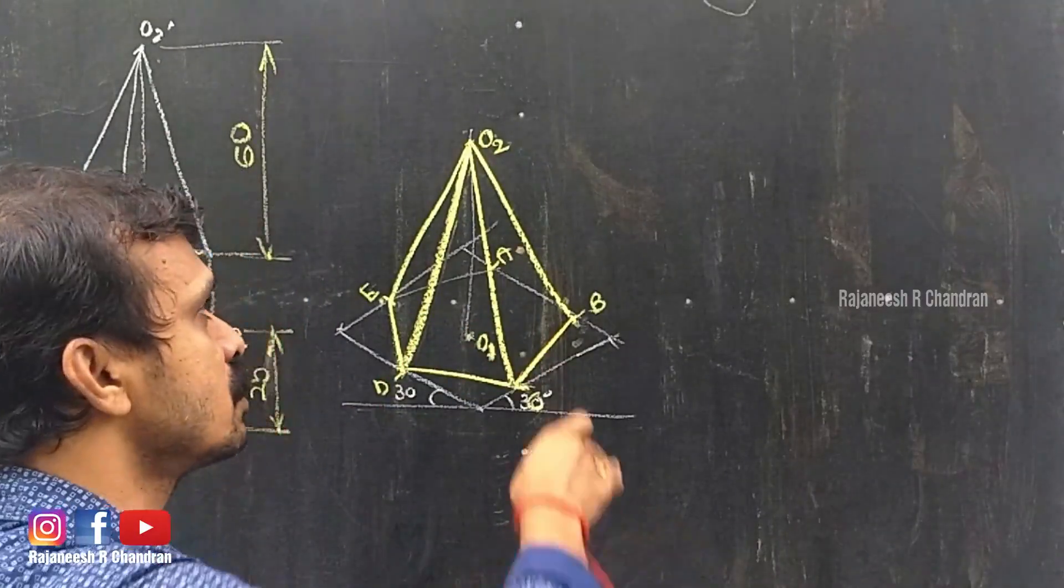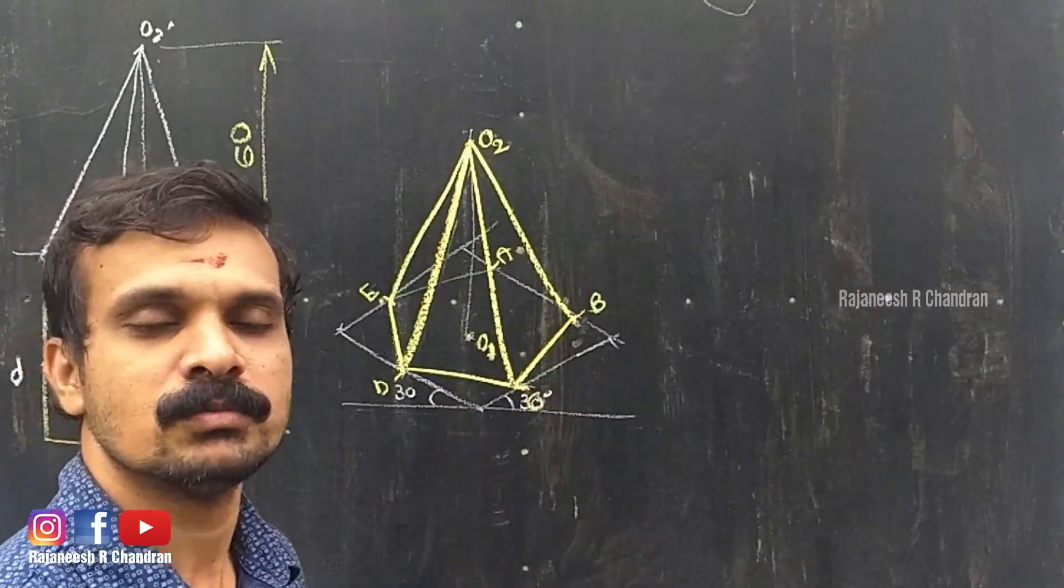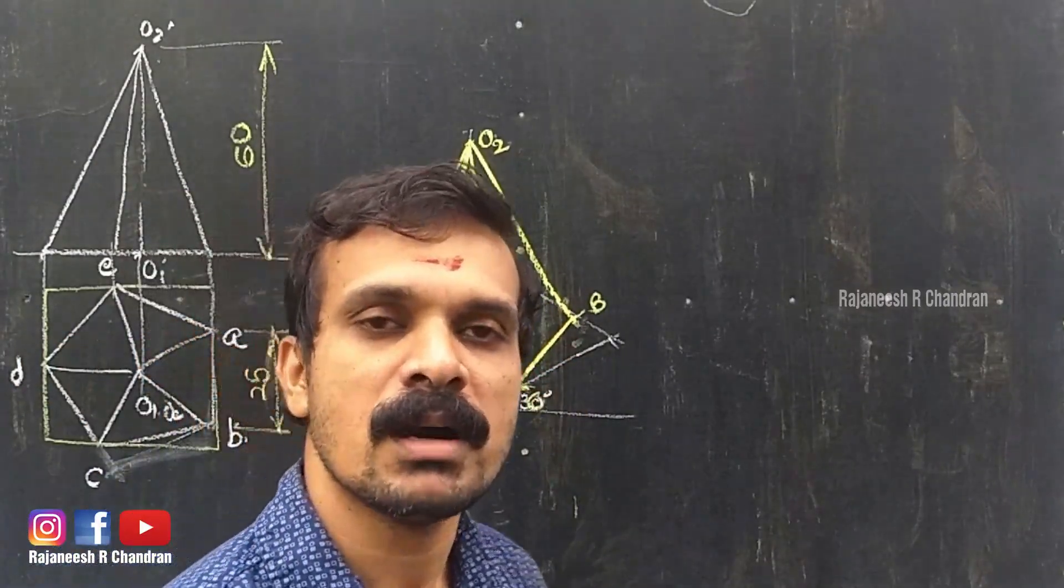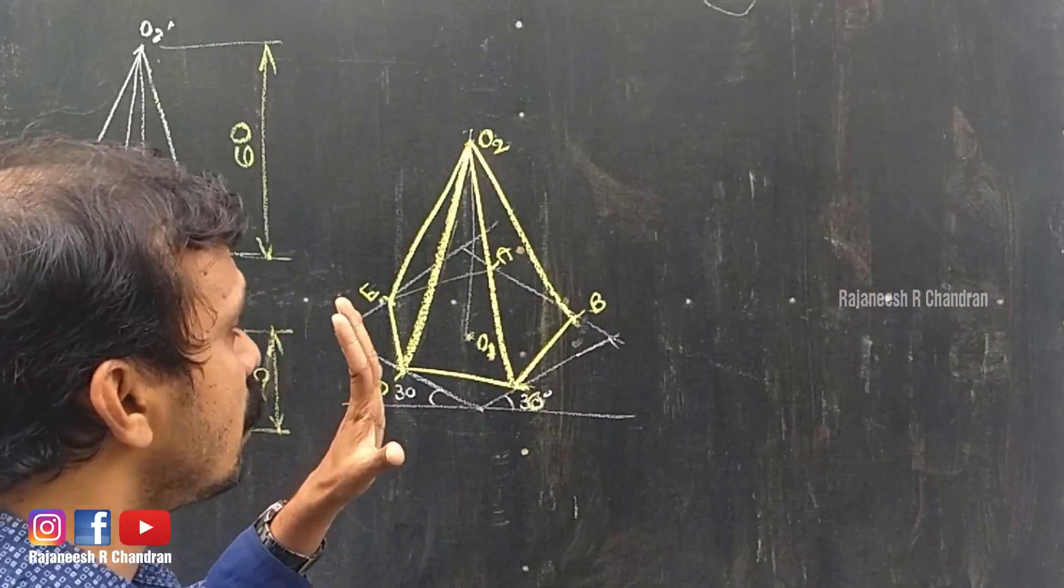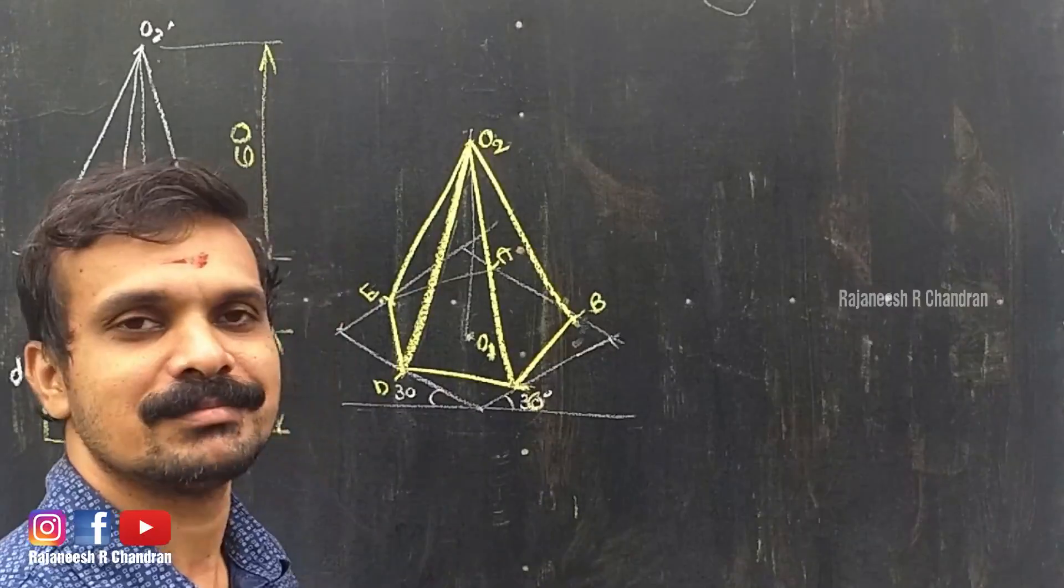The resulting projection will be 81.6% diminished as that of the isometric view. This is the method of constructing isometrics of pyramids. Thank you.